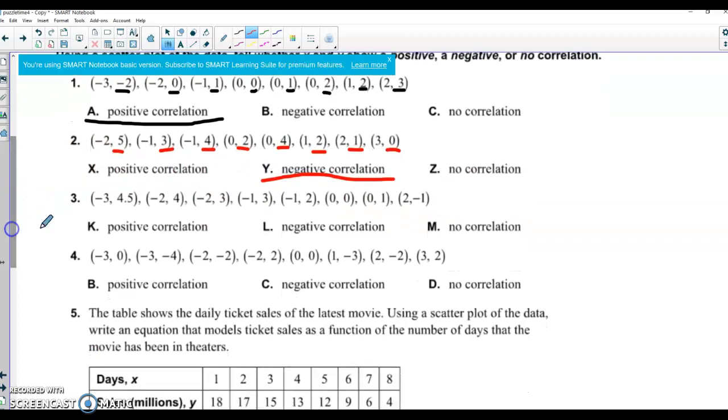So that one would be a negative correlation. Here it looks like we're going down, and down, and staying the same, and down, and down, and then up, but then back down. So most of those were going down again, so that's another negative correlation.